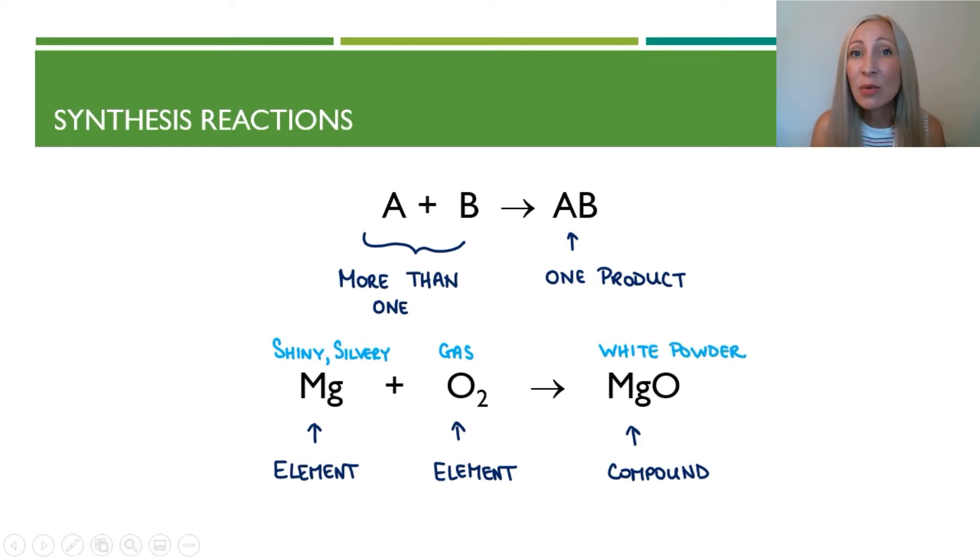Now let's dive in and see what's going on with the charges during this reaction. Magnesium is an element, which means it has no charge. Oxygen is an element also, which means it has no charge. But when they combine together, they form a compound. And this is an ionic compound because we have a metal and a non-metal, a cation and an anion.